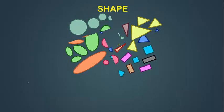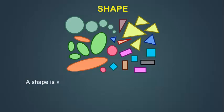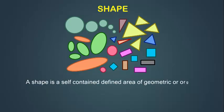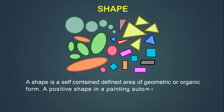A shape is a self-contained defined area of geometric or organic form. A positive shape in a painting automatically creates a negative shape.